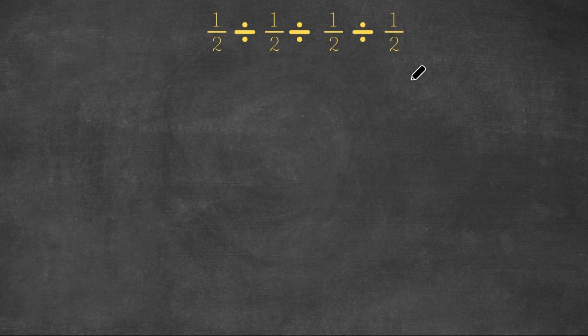So we have 1 half divided by 1 half divided by 1 half divided by 1 half. Now we first have to do 1 half divided by 1 half right here.